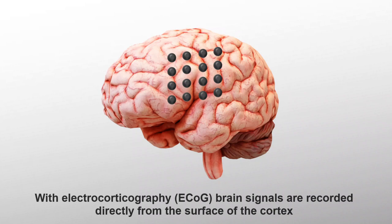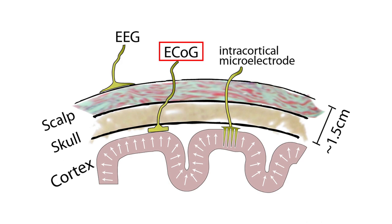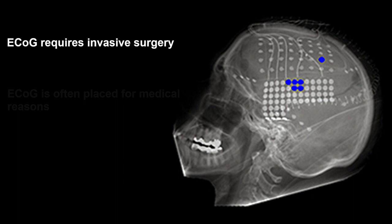And this is exactly what ECOG is. For an ECOG measurement, a grid of electrodes is placed directly on top of the cortex, under the skull. Of course, that means it requires surgery to place the electrode grid. Therefore, this procedure is invasive and is only done when there is a medical imperative.